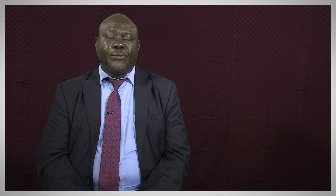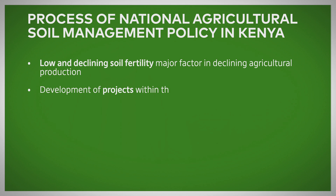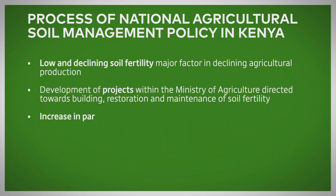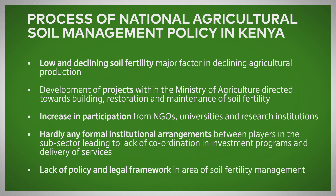The process of developing the National Agricultural Soil Management Policy in Kenya was triggered by several factors. From reports of the Ministry of Agriculture and other stakeholders, it was found out that there was continuous declining productivity from the soils. Farmers were continuously getting less from the soils. Also, stakeholders expressed concern about not being coordinated, and there were issues of lack of a policy and legal framework through which soil issues could be handled. So this triggered the beginning of the process of the soil management policy.